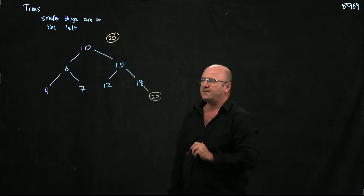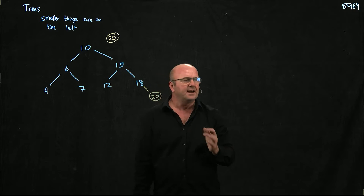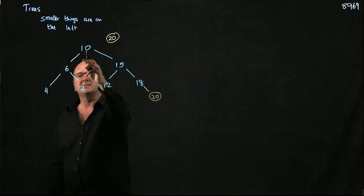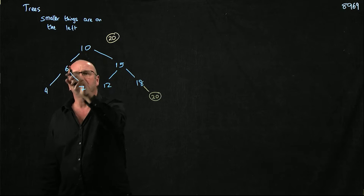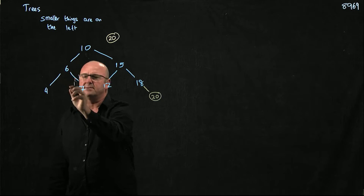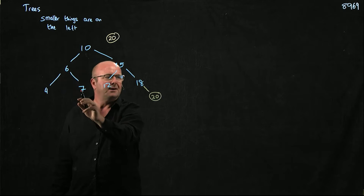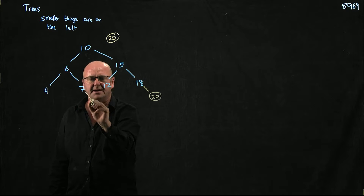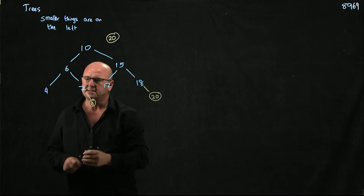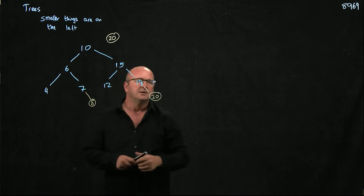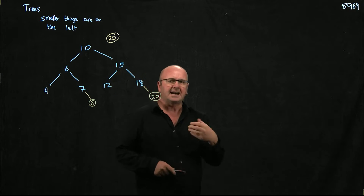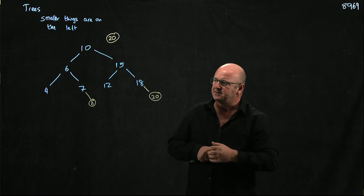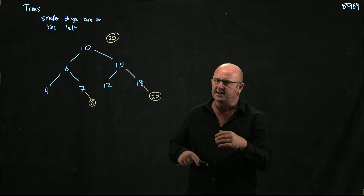If we wanted to add an 8 to the tree, we would start at the 10, go left to the 6, go right to the 7, go right again, and add our 8. We always add to the tree at the bottom, at an empty node at one of the leaves.